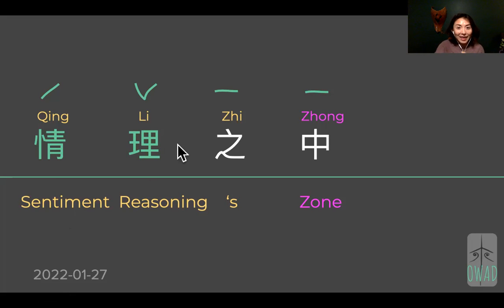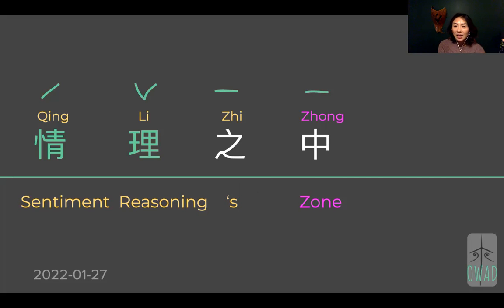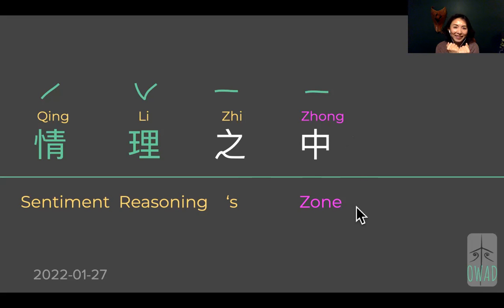Then we have this very versatile character 之 — kind of like the letter 'zi' with a dot on top, pronounced 'zhi'. Zhi can mean multiple things. Here, when we say 之中 (zhi zhong), it's connecting — it becomes possessive of what's before it. So it's your sentiment, your reasoning, and this connector word means the above, like some attributes or features related to the above mentioned. That's the connector.